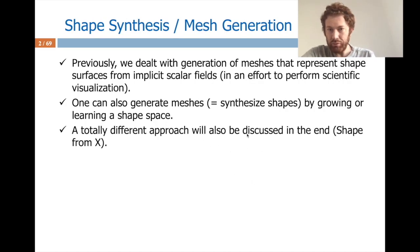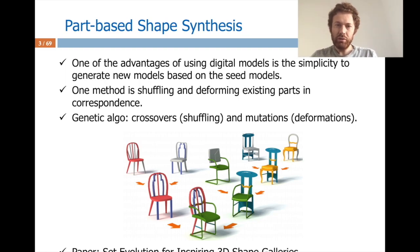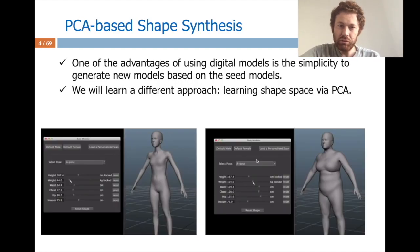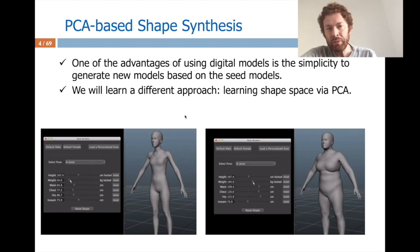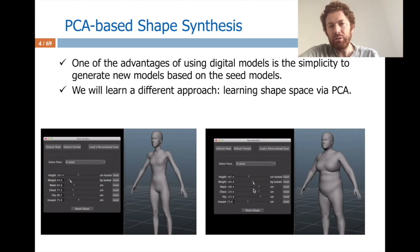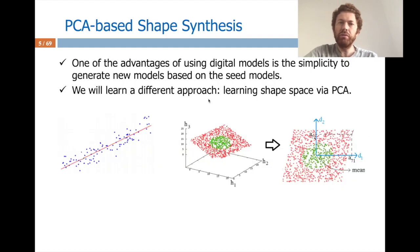I will also show a totally different approach called shape from X. The growing part is about shuffling and deforming a set of seed meshes in a consistent way through some kind of optimization. A genetic algorithm has been used in one paper to that end. Today I will focus on an algebraic approach based on Principal Component Analysis. This may be familiar — in video games like NBA or FIFA, we have sliders to create new players, done by learning the shape space and attaching semantic attributes.